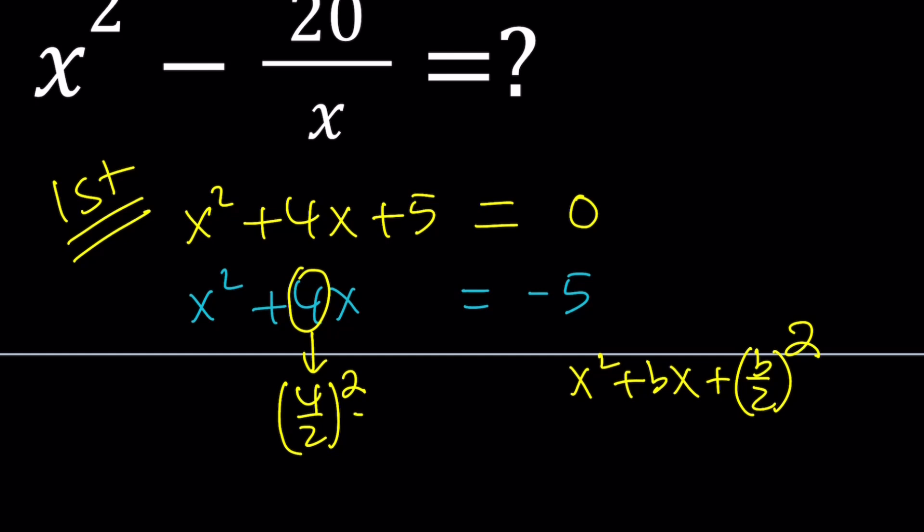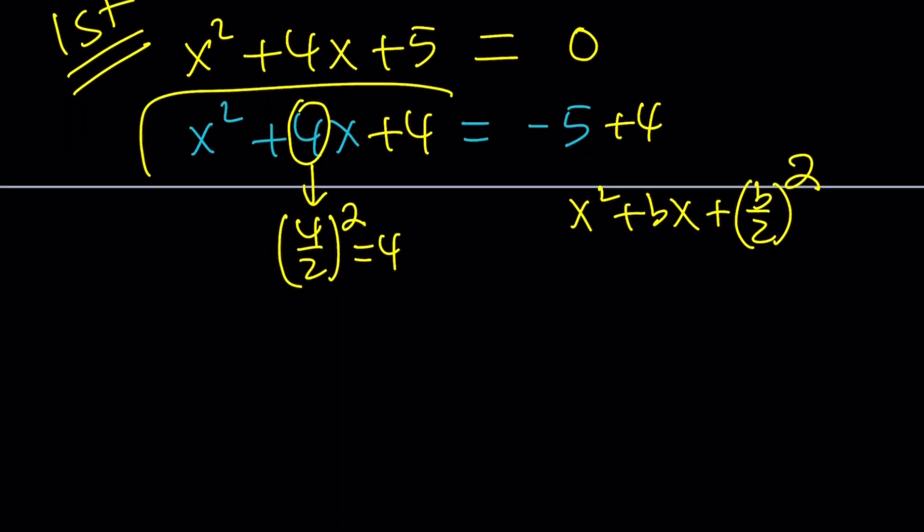We're going to add 4 to both sides, plus 4, plus 4, and that gives us a perfect square. This becomes x plus 2 squared equals negative 1.